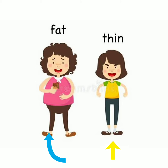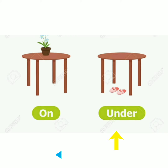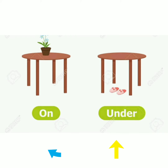Next, fat, thin — yani mota, patla. Next is on, under — yani ooper, neche.